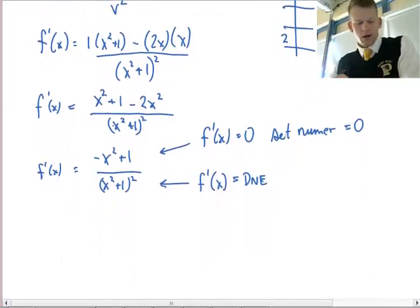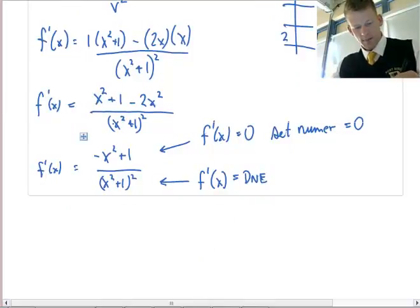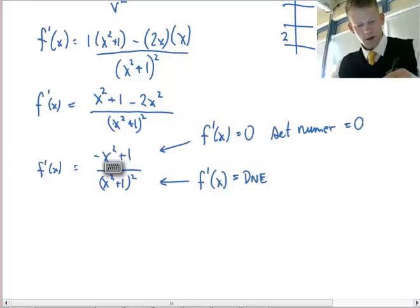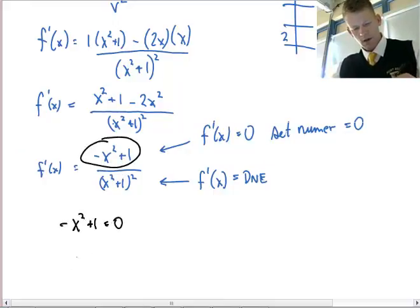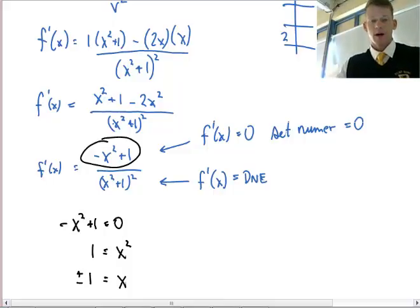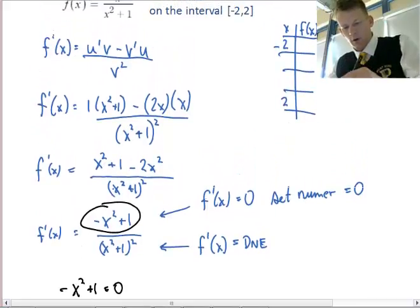I take the top and set it equal to 0: -x² + 1 = 0. That means x² = 1, so I have two critical point values. Taking the square root of both sides gives plus or minus 1. So I have two critical point values: -1 and positive 1. I've got four values to check.